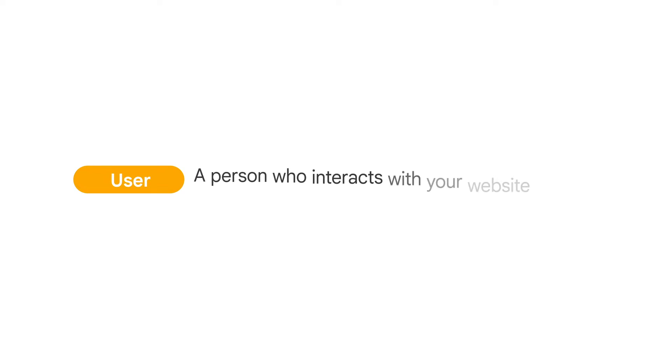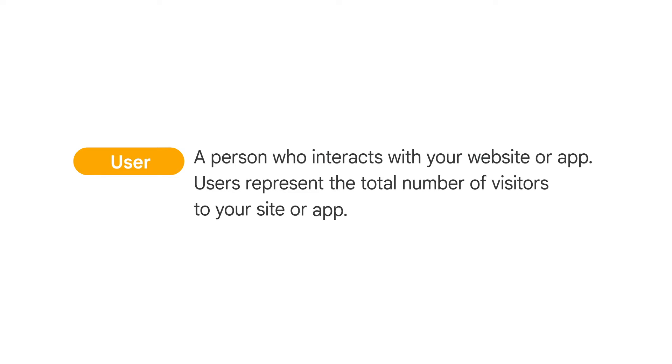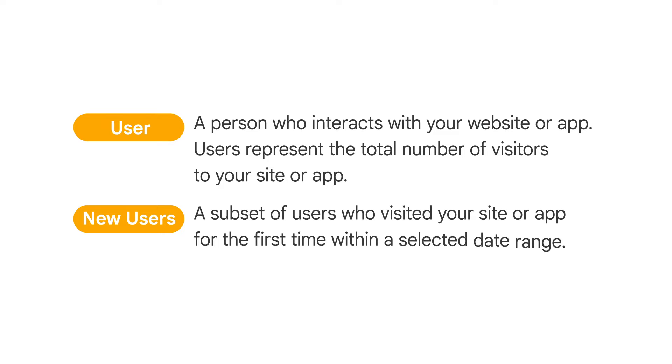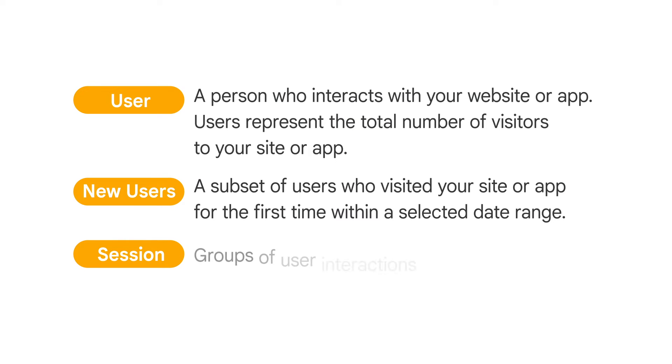Here are a few metrics that quantify your traffic. A user is a person who interacts with your website or app whose activity you're measuring — users represent the total number of visitors to your site or app. New users is a subset of your users, specifically those who visited your site or app for the first time within the selected date range. A session groups a user's interactions together in a given timeframe — think of it as a single time period of interaction with your site or app. A session begins when they open your app or view a page and ends when they exit or have been inactive for at least 30 minutes. During that one session, they might visit multiple pages or screens, trigger multiple events, or make one or more purchases.